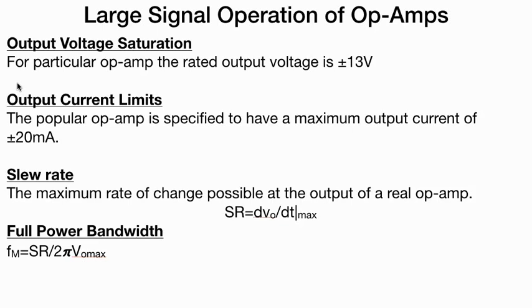The slew rate is differentiation of output voltage with respect to time, dV_o/dt. The full power bandwidth FM is SR divided by 2π times V_o max.